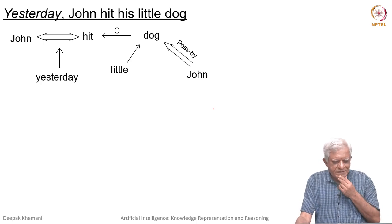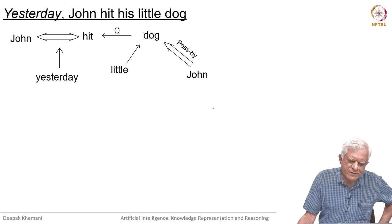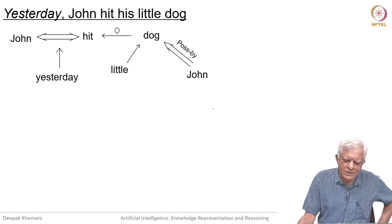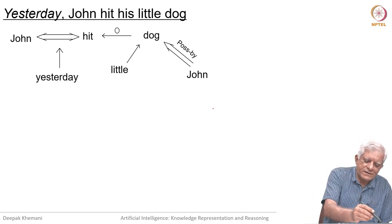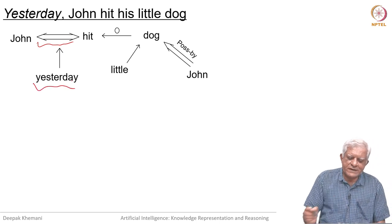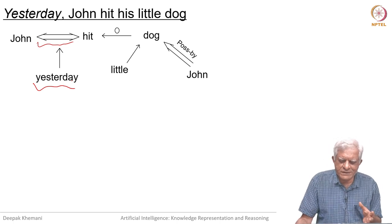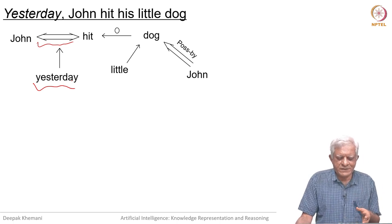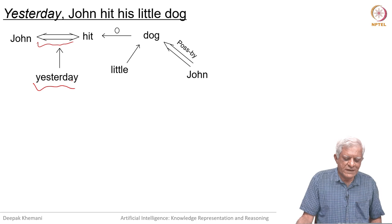So, this is the sentence we had seen earlier: John hit his little dog. Supposing we wanted to say 'yesterday John hit his little dog' — conceptualizations can have a time associated with them and we can add 'yesterday' here. We have also said that you should not use the word 'yesterday' literally but must make it explicit and so on — that is the idea of adding more information to the same conceptualization.